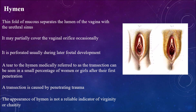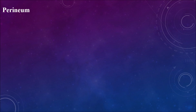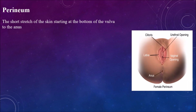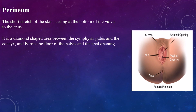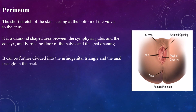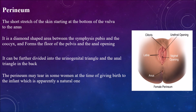The appearance of the hymen is not a reliable indicator of virginity or chastity. The perineum is the short stretch of skin from the bottom of the vulva to the anus. It is a diamond-shaped area between the symphysis pubis and the coccyx, and forms the floor of the pelvis. It can be further divided into the urogenital triangle at the front and the anal triangle at the back.